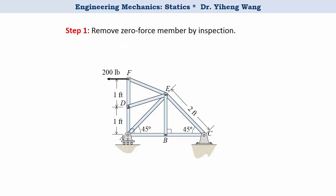The first step, we will inspect the structure and remove any zero force member. Remember, for any joint that is connected to only two truss members that are not collinear, and if the joint is not subjected to any external force, then these two truss members are both zero force members.